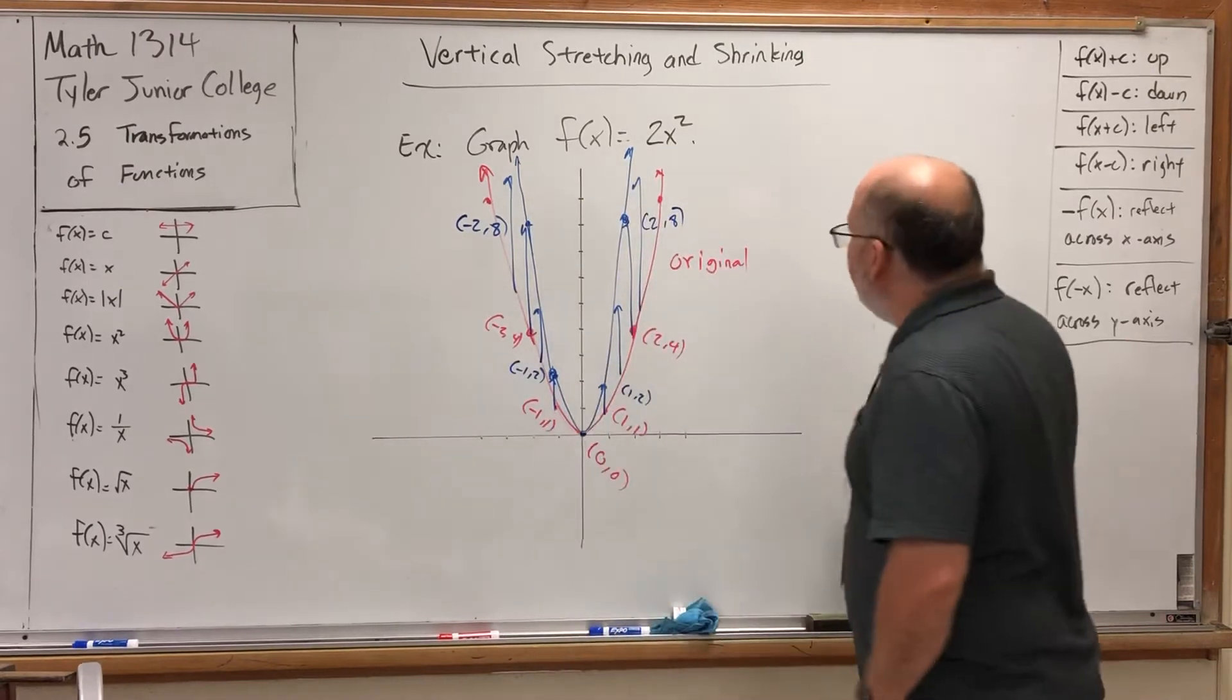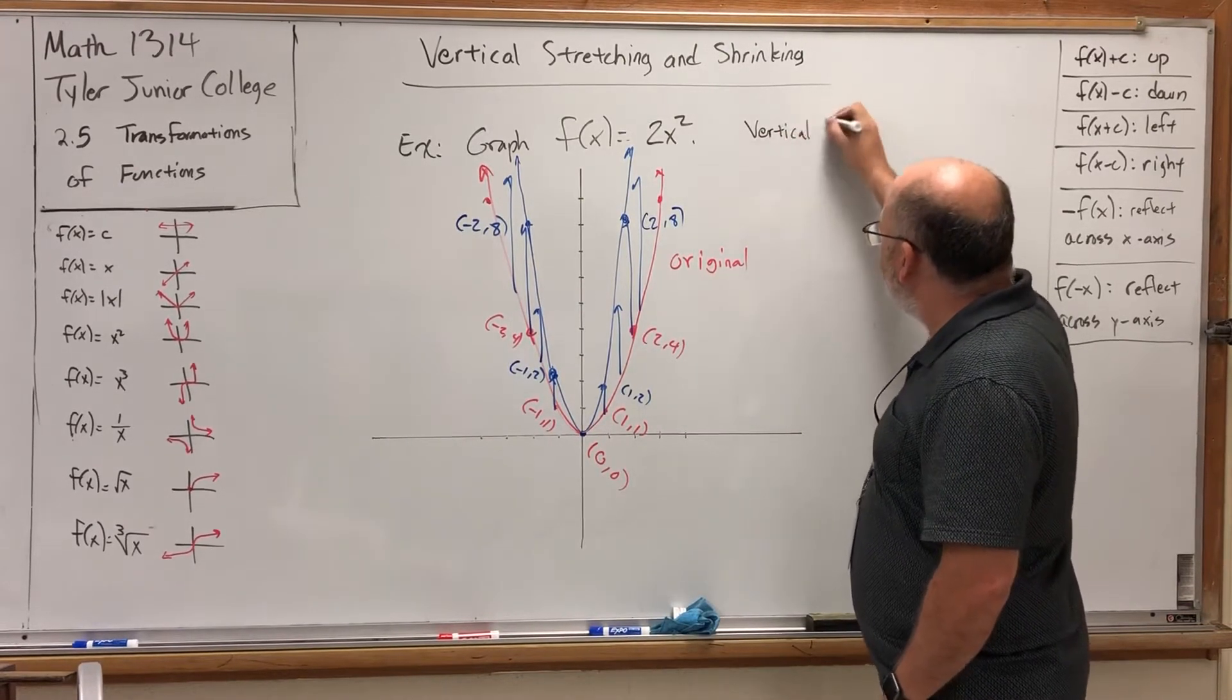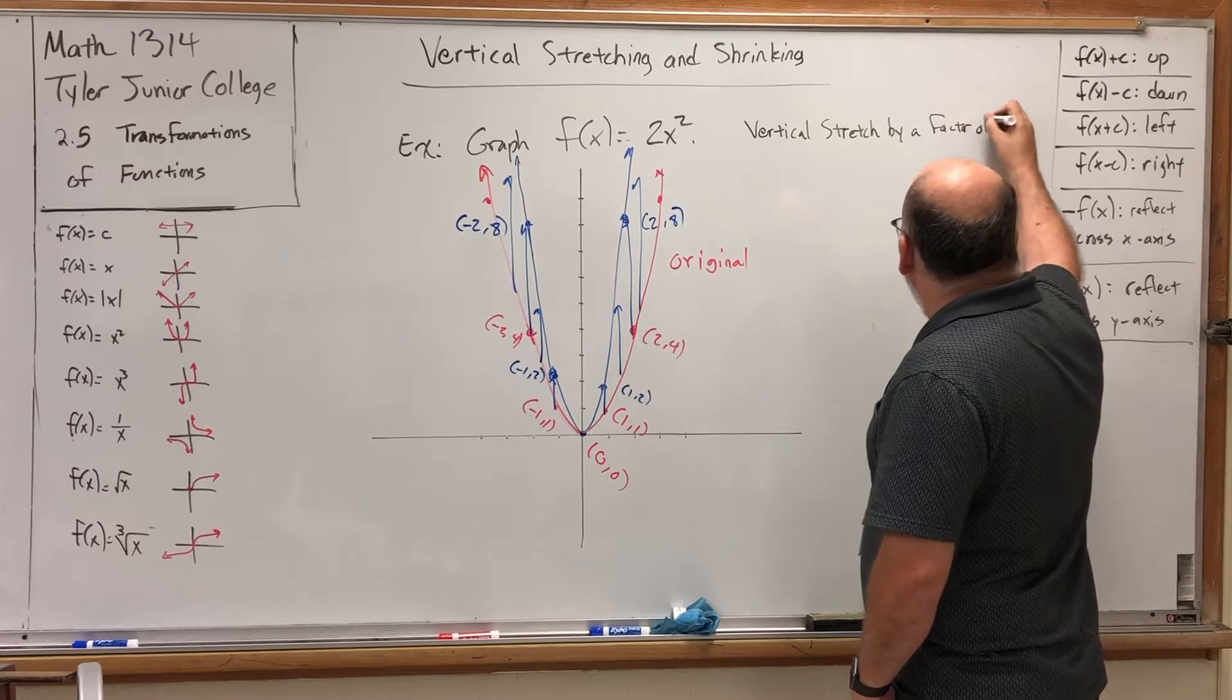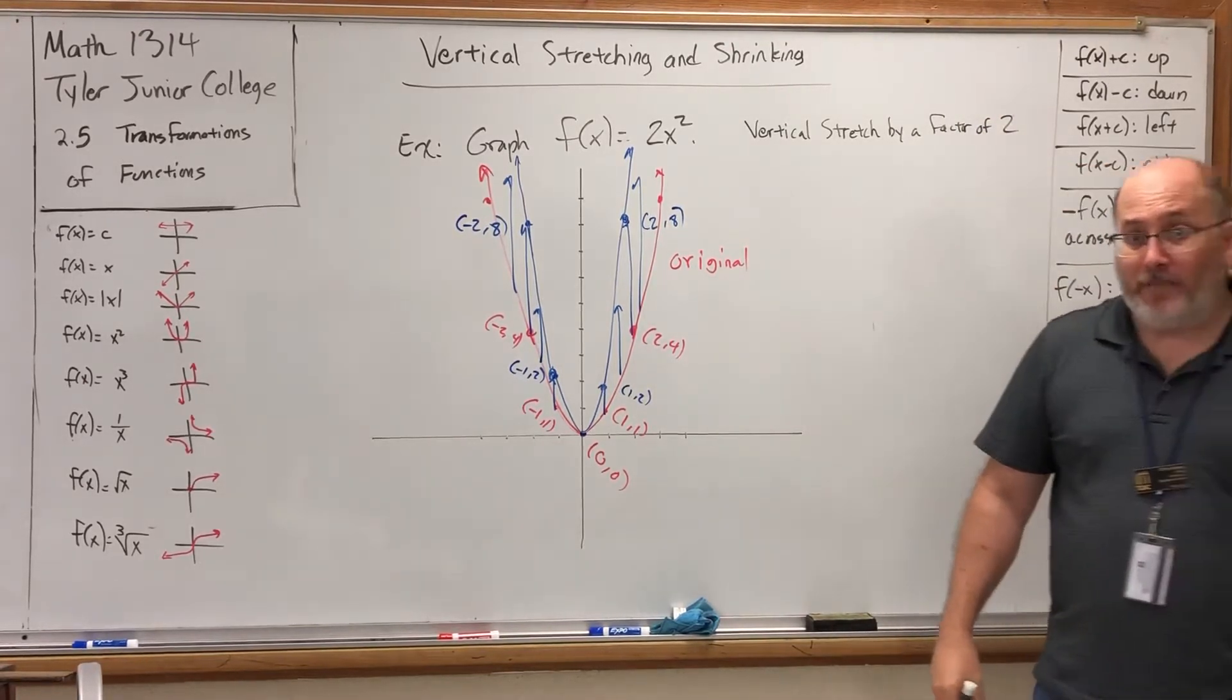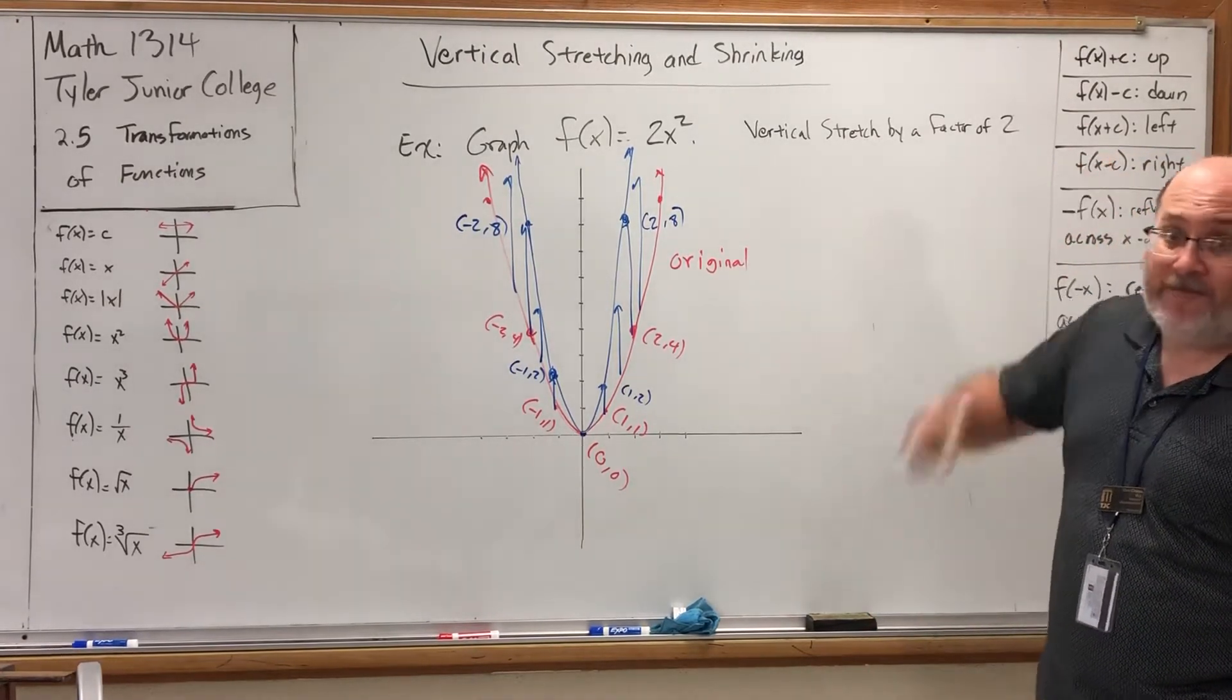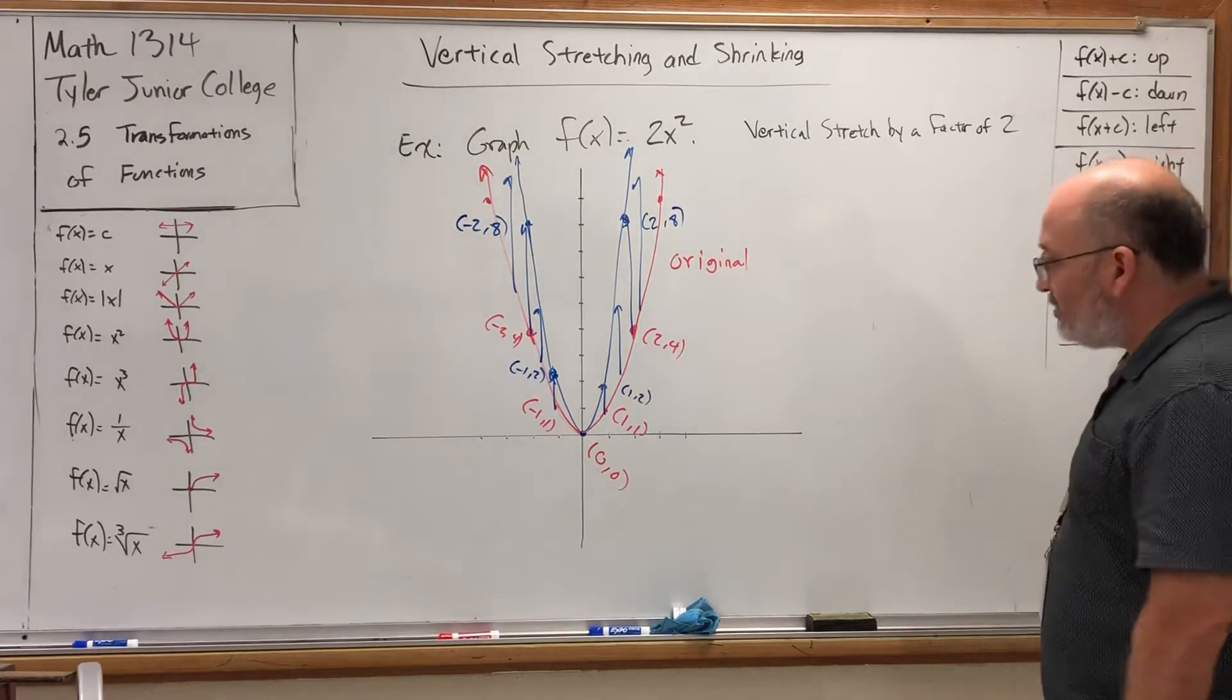So the transformation that was evoked is that it was a vertical stretch by a factor of 2. So basically all the y coordinates got multiplied by 2. And if it were 3x squared, it would have gotten multiplied by 3. It would have gotten a lot taller, a lot faster, and then at the end in a skinnier parabola. But that's a stretching.